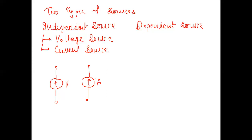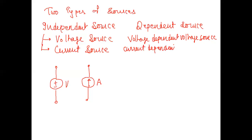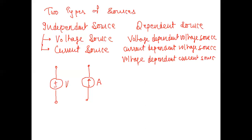Dependent sources are classified into: voltage dependent voltage source, current dependent current source, current dependent voltage source, and voltage dependent current source.